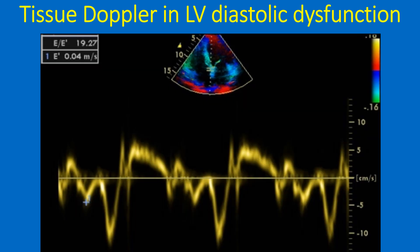The pulsed wave tissue Doppler tracing shows that the next negative wave after E prime occurs during atrial contraction and is designated AA. The positive wave after AA is the SA wave, representing the systolic myocardial wave recorded as the annulus descends toward the apex. E prime velocity is also known as EA (A for annulus) or EM (M for myocardial velocity). It reflects early myocardial relaxation and occurs during the ascent of the mitral annulus. Measurement of E prime is useful in differentiating pseudonormalization in mitral inflow from a normal pattern.